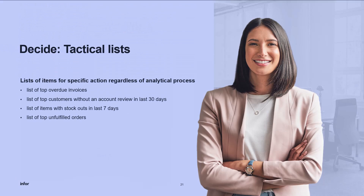The last item is the decide dashboard. There isn't really a template for these — they are simple dashboards, usually with a list report on them. We have a few examples: list of overdue invoices, list of customers without an account review in the last 30 days, list of items with stock outs in the last 7 days, and a list of unfulfilled orders. Most of these are focused on top items because it is easier to take action on a select list rather than a few hundred of them.